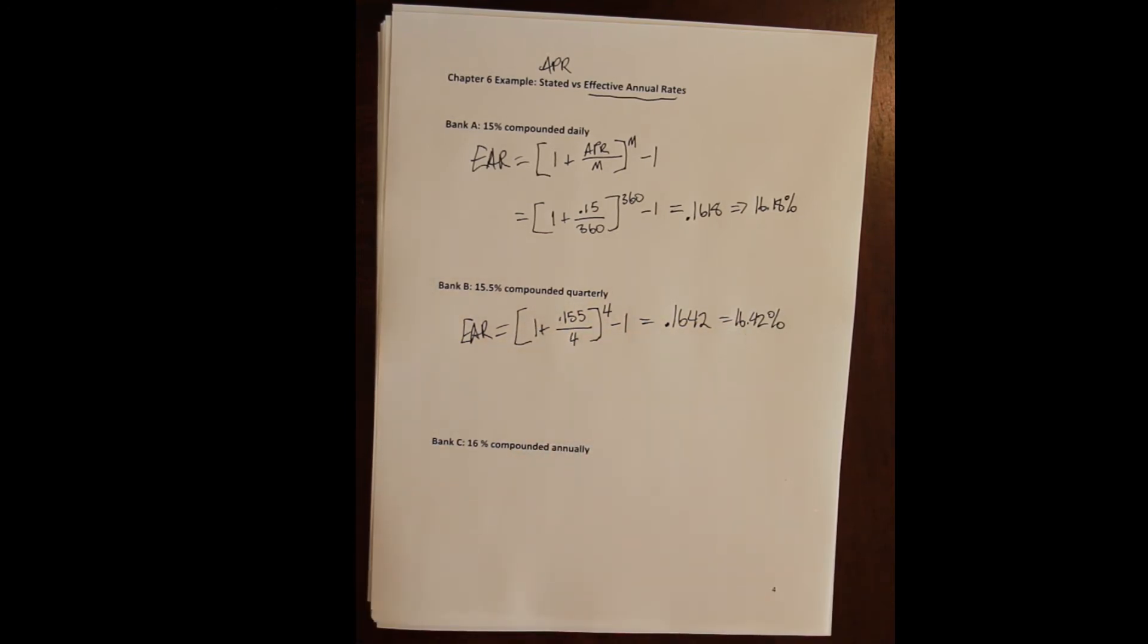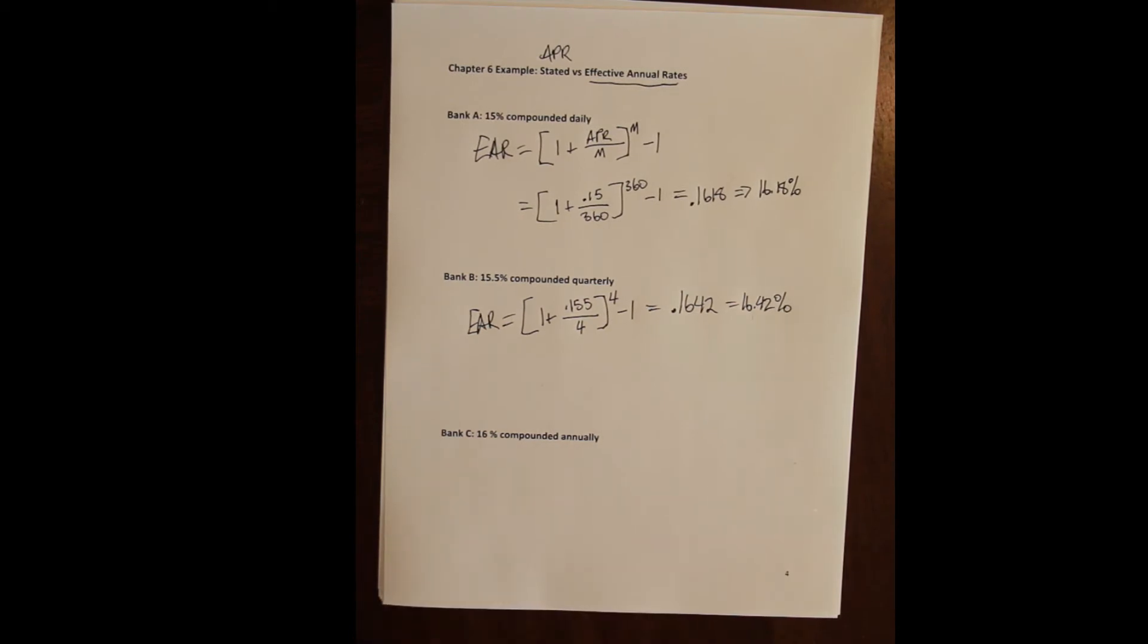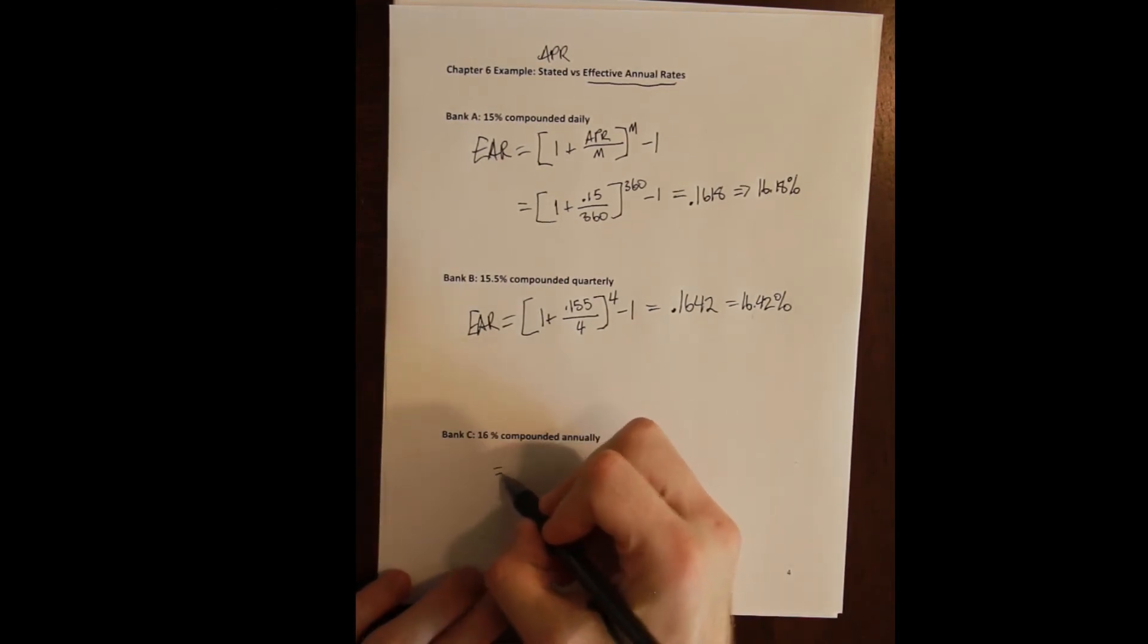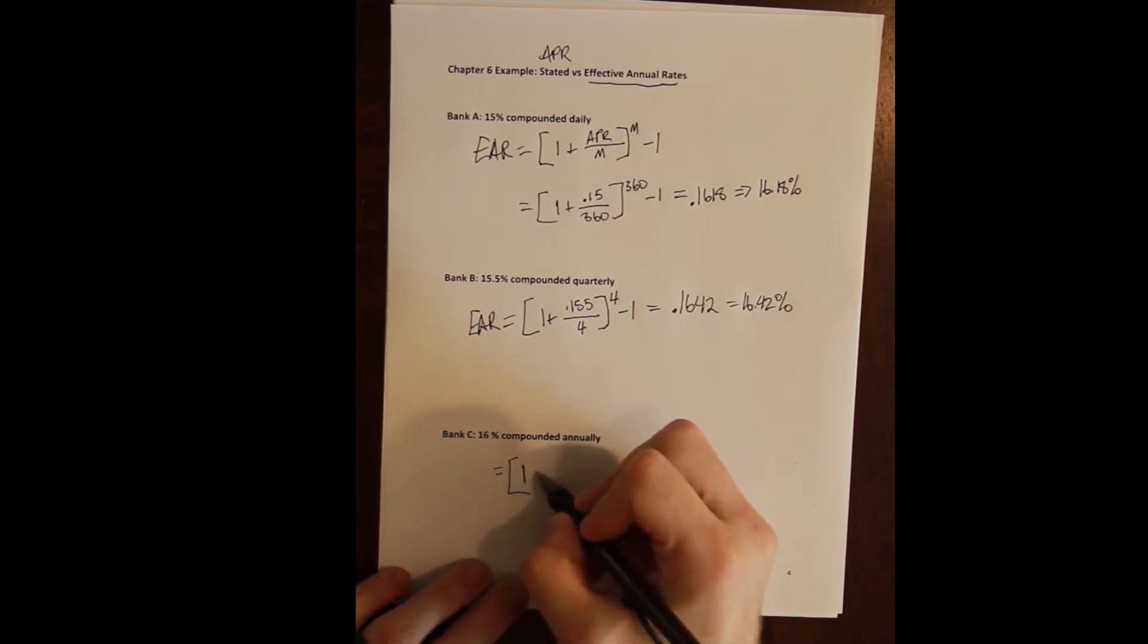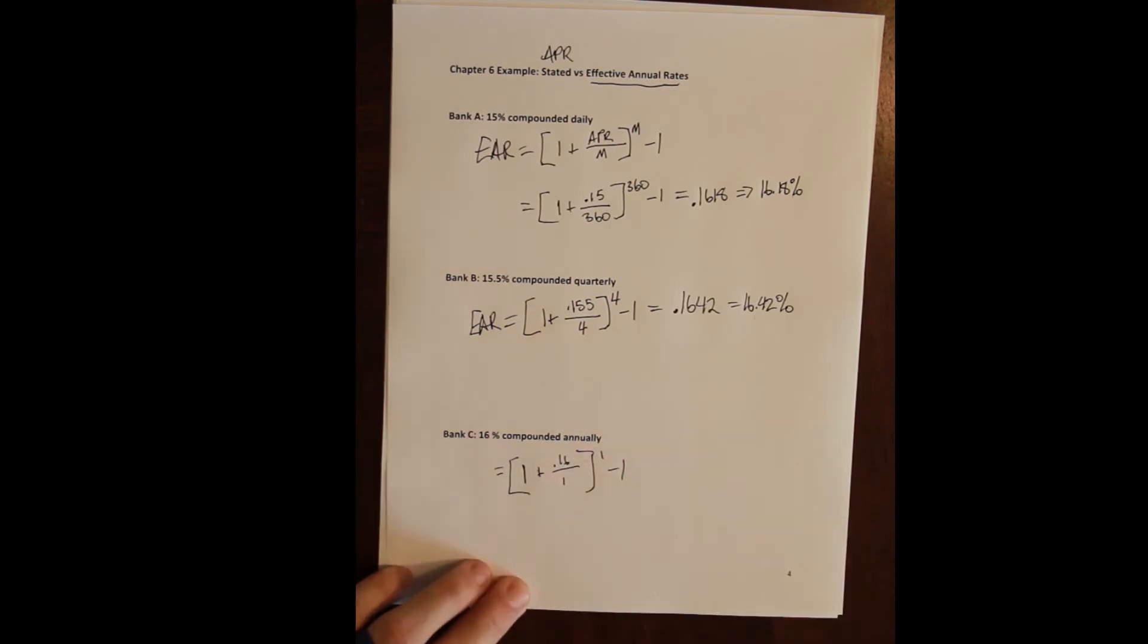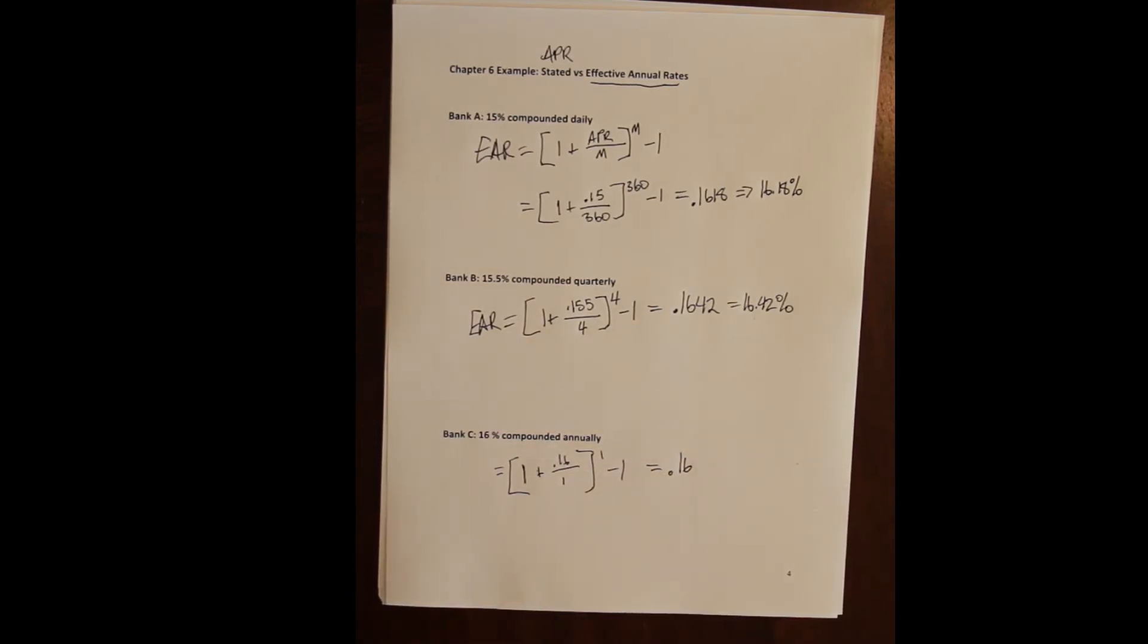The effective annual rate for Bank C, hopefully you can see this is already telling us what the effective annual rate is because it's given as an annual rate. But if we weren't sure, we could plug it into our formula: one plus 0.16 divided by one raised to the one minus one. You can see that all those ones cancel out and we end up with 0.16. What is the best loan to get? It's this one.